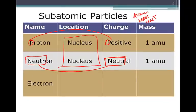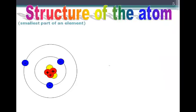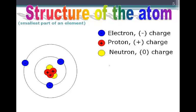Our third subatomic particle, the electron, is found in the electron cloud. It has a negative charge. Electrons are so small that we say they have zero mass. Looking at the atom, we have the red protons and yellow neutrons in the nucleus, and the blue electrons outside the nucleus in the electron cloud.